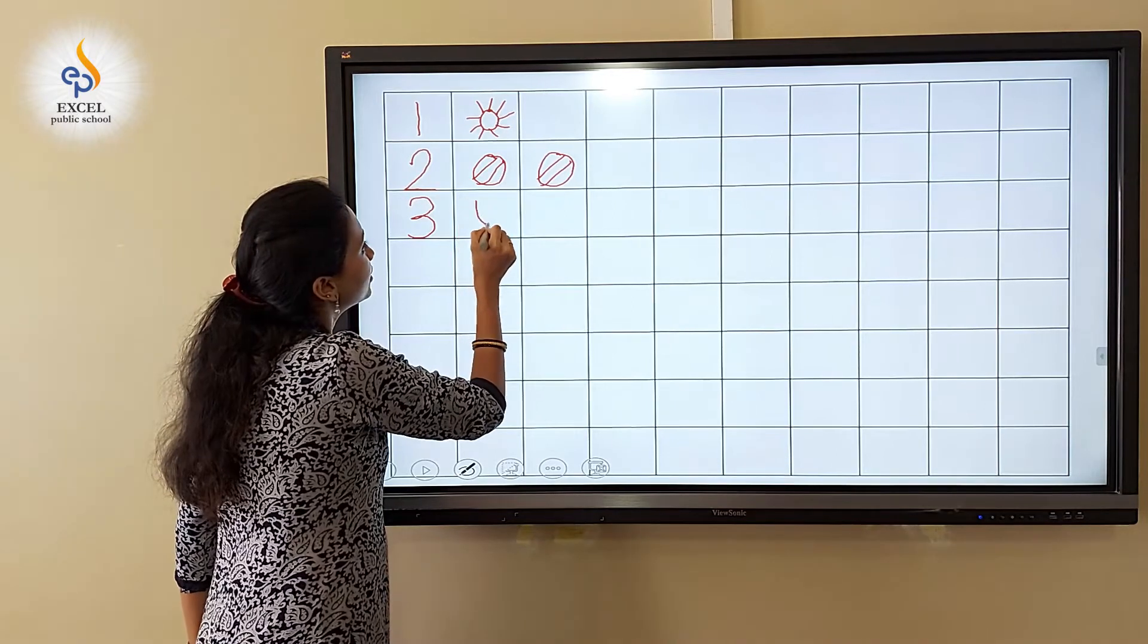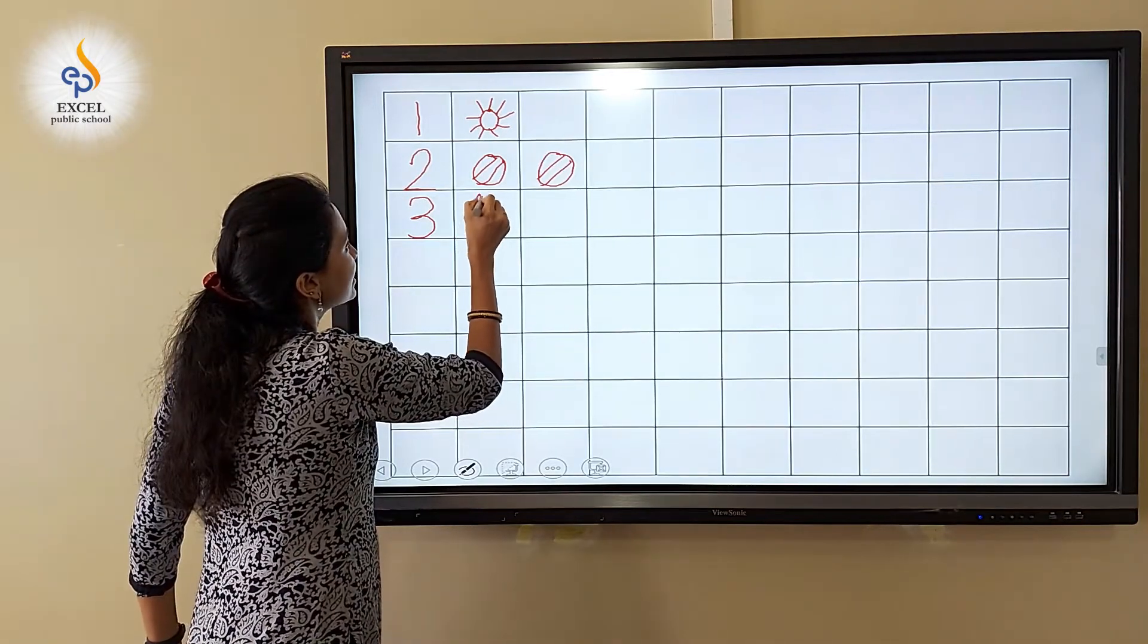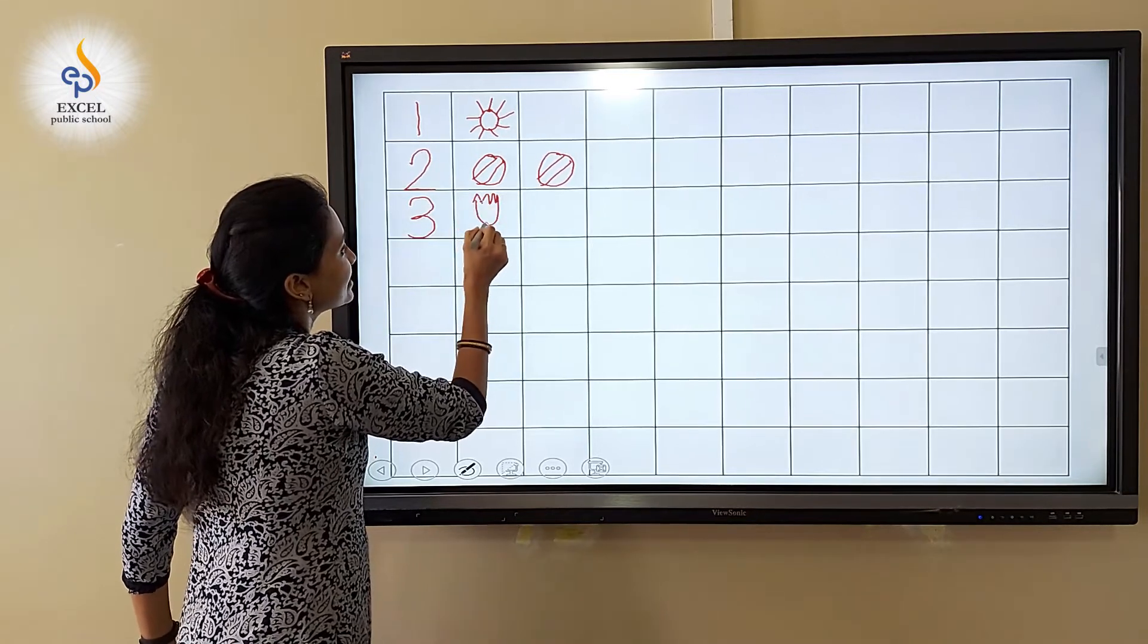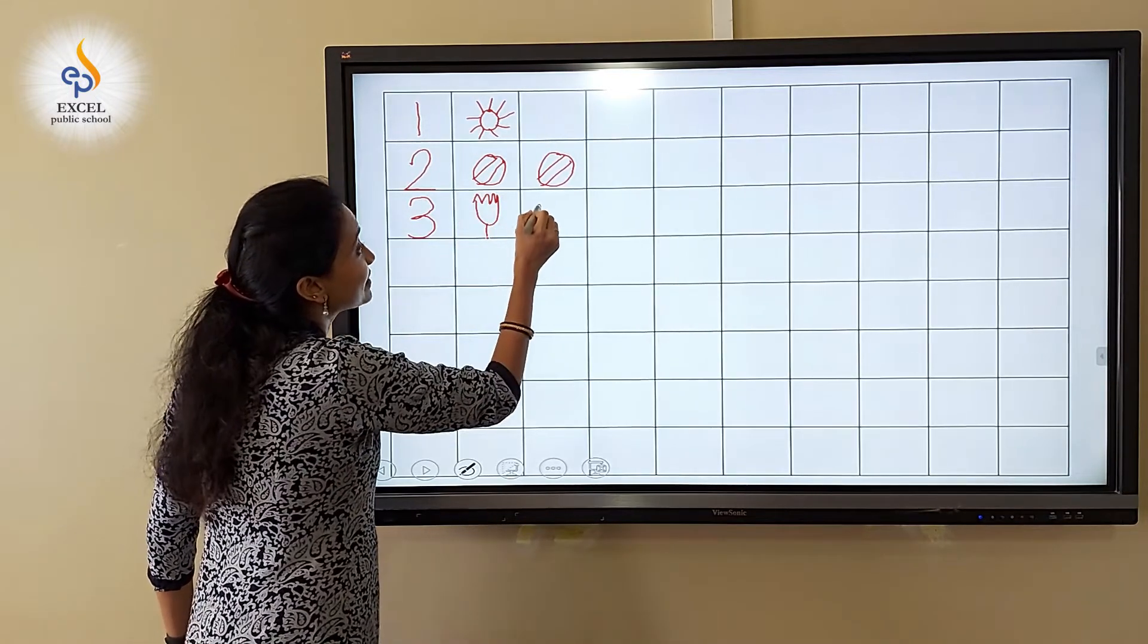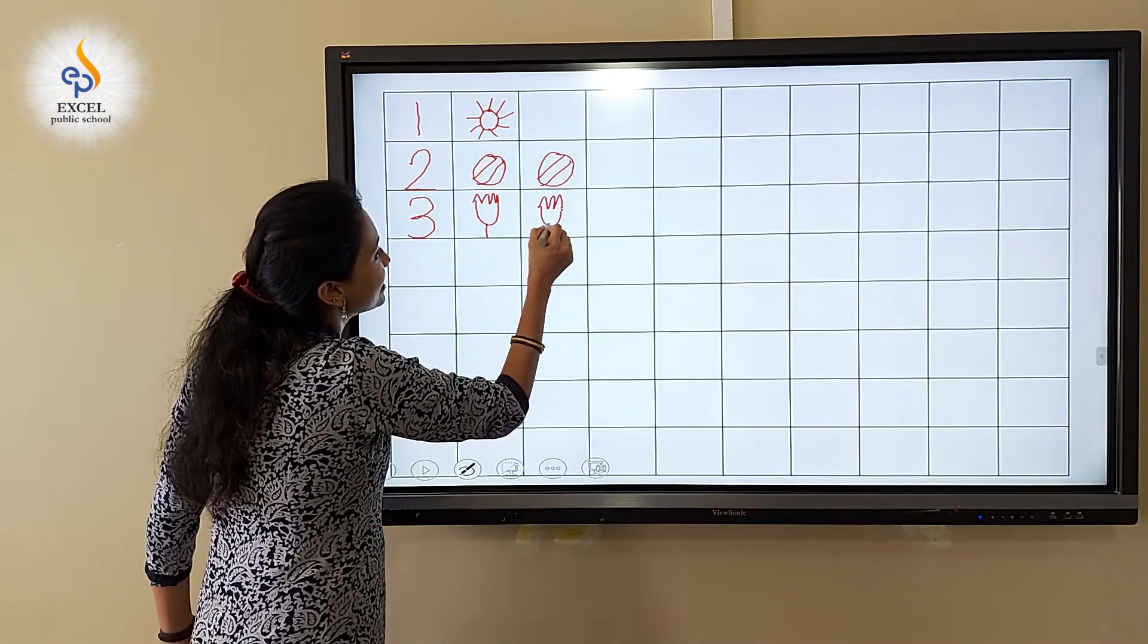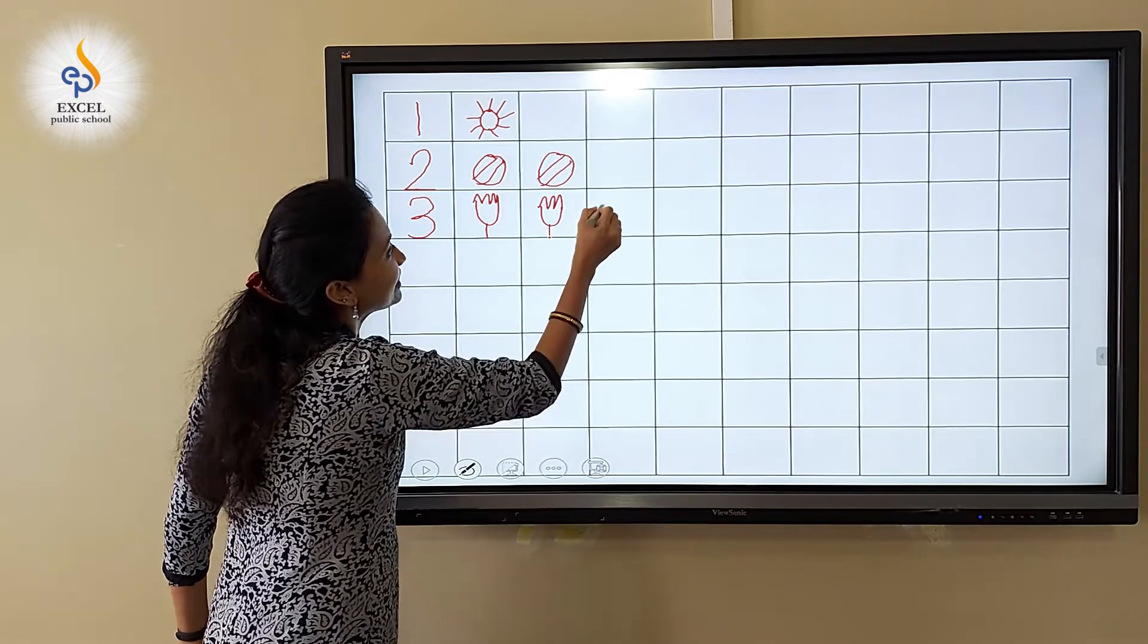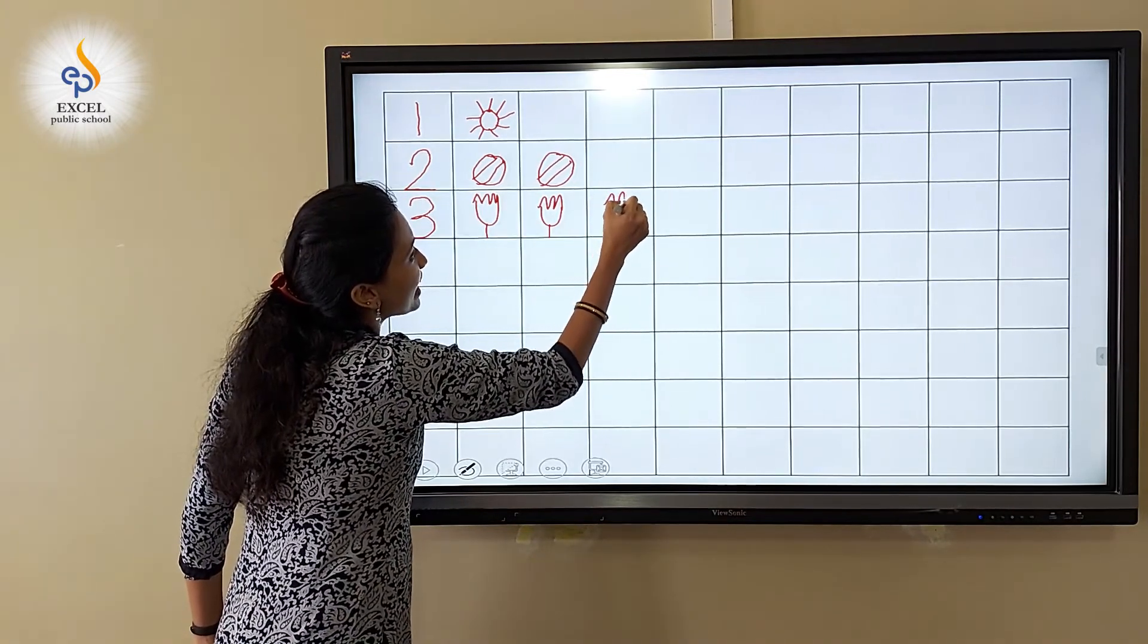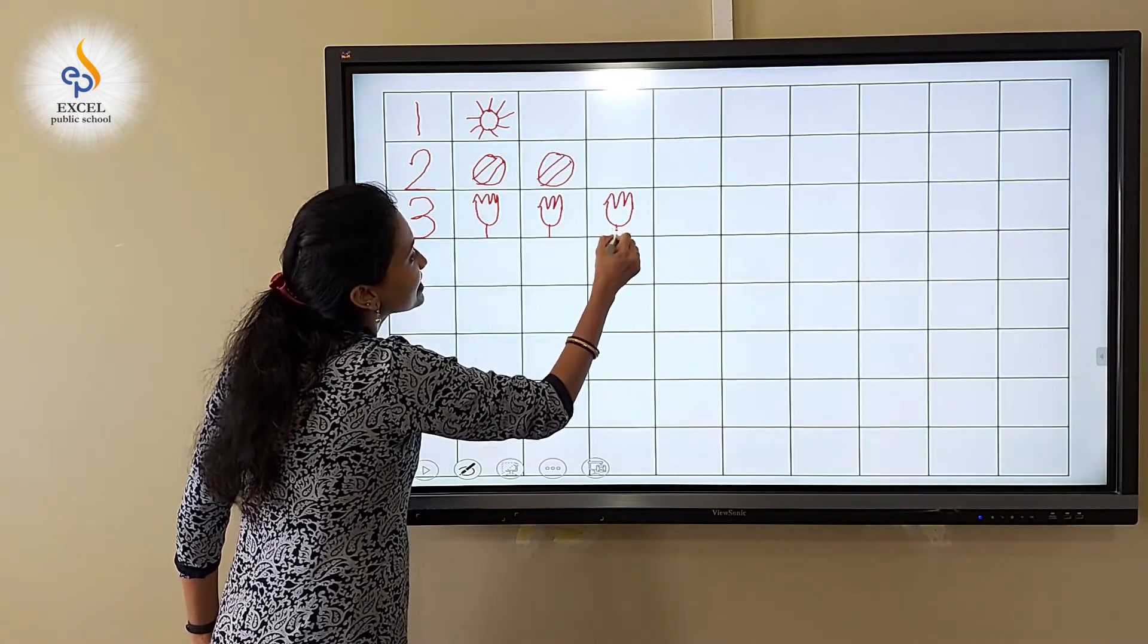U curve. Let's draw zigzag like this. And then one standing line. U curve, zigzag, one standing line. U curve, zigzag, one standing line.